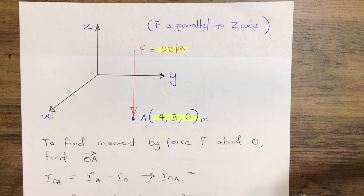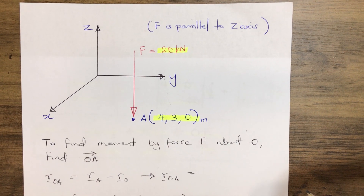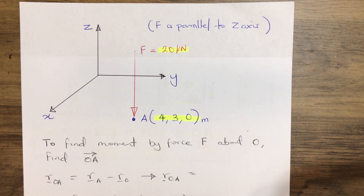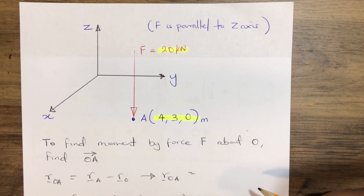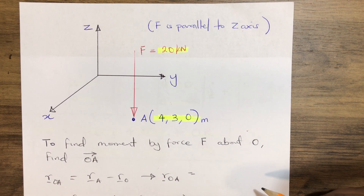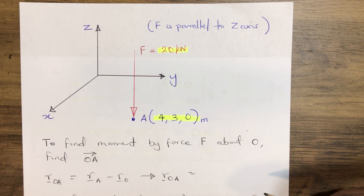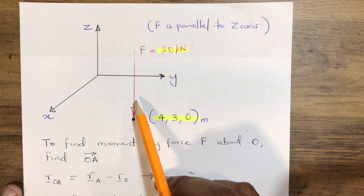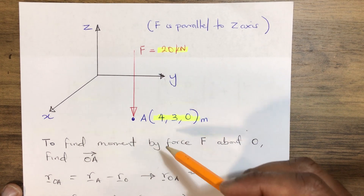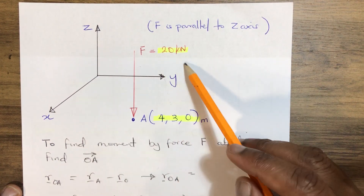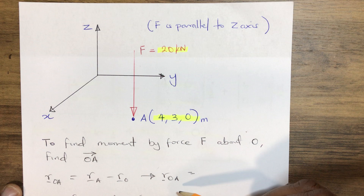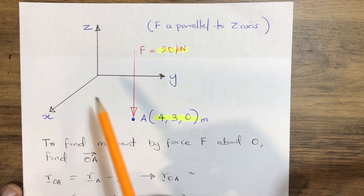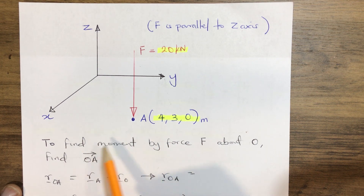Hello everyone, welcome to our channel. Today we shall be discussing how to find the vector moment created by a force in the X, Y, Z directions. We have a representation of a moment of a force F which equals 20 kilonewtons acting downward on the negative axis of Z.